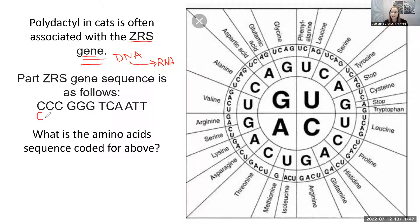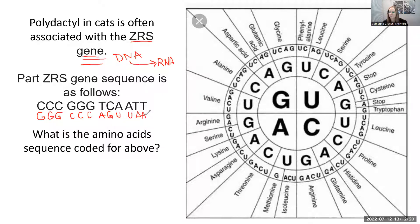So I'm going to transcribe this into RNA. What pairs with C? G — so CCC becomes GGG. What pairs with G? That's going to be C — so GGG becomes CCC. What pairs with T? That's going to be A, and then G. Here's where it gets tricky: if it were DNA, I would put a T here because A and T pair together, but it's not DNA, it's RNA. So I'm going to put a U. So the next one is U, and then A. This is my DNA sequence, and I just transcribed it to RNA.